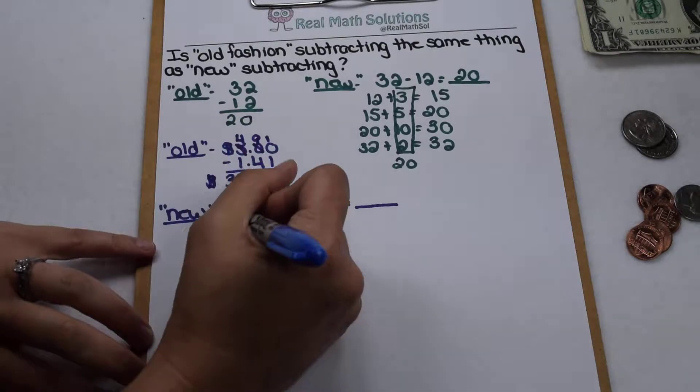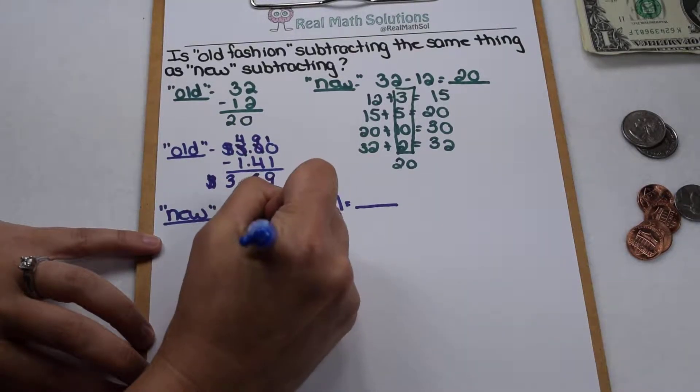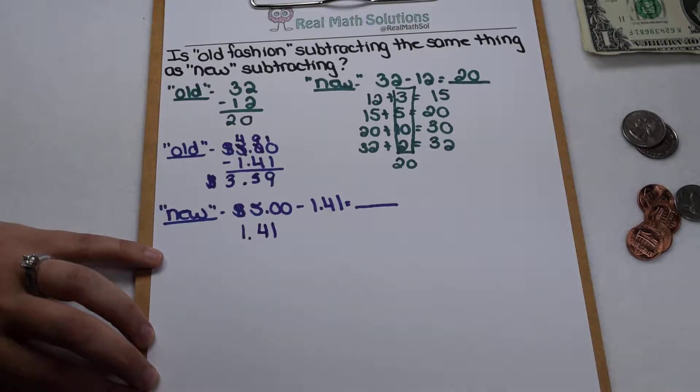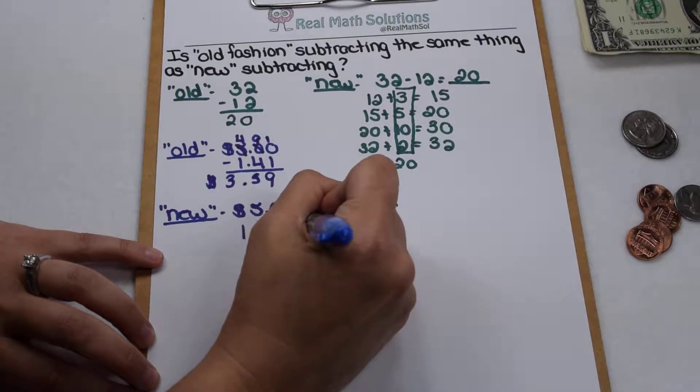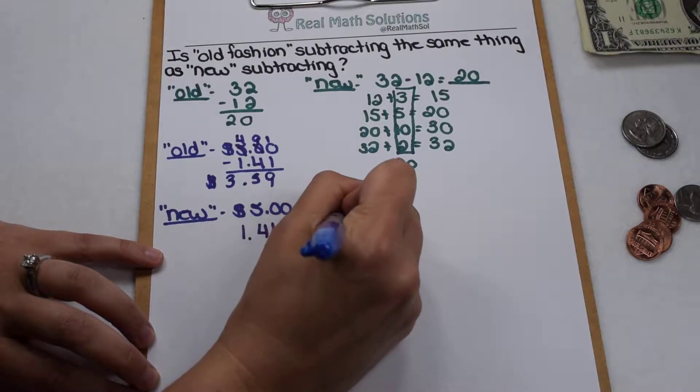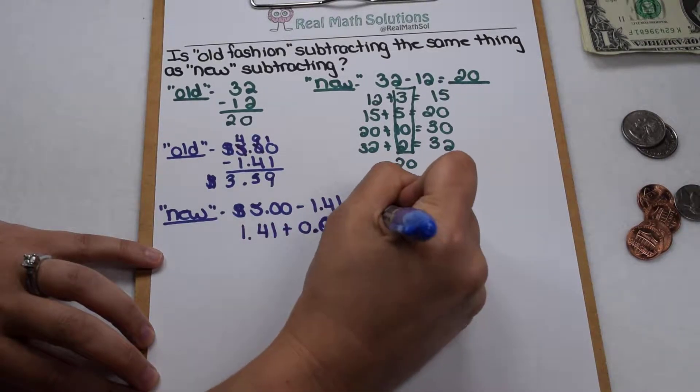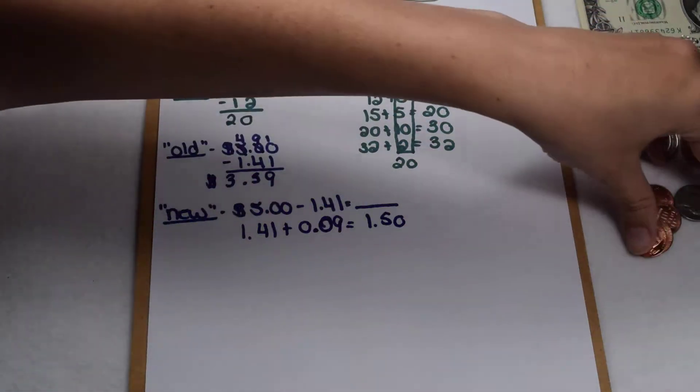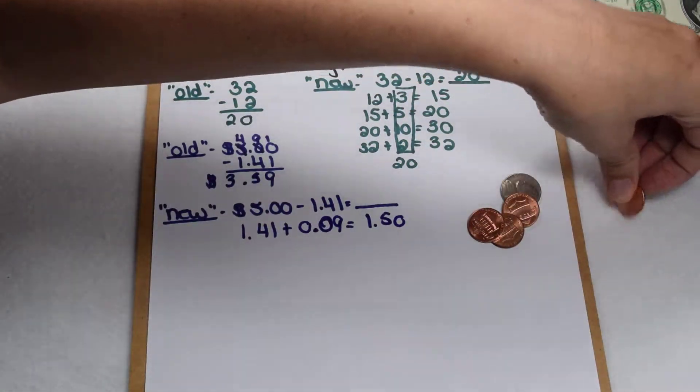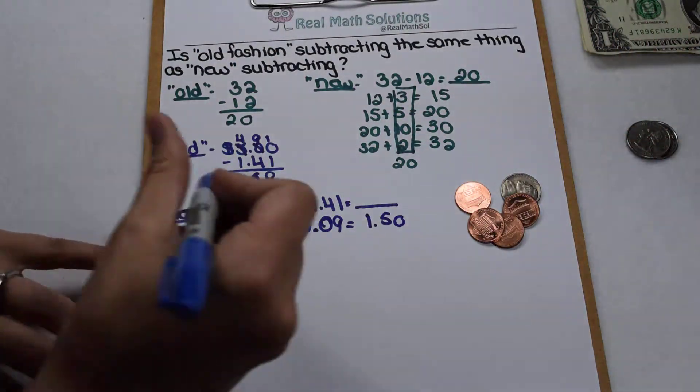So most of us, if we had to count change, we would start with, okay, they bought an item for $1.41. Well, let's see. My next benchmark would be 50 cents. So that is 9 cents away. So part of their change is going to be 9 cents and that takes me up to $1.50.